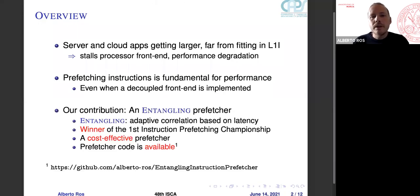Our contribution is an entangling prefetcher for instructions. Entangling is a kind of correlation which is based on latency. Instead of correlating consecutive accesses or misses, it's correlating between accesses that are at different distances based on the latency entailed by them. The entangling prefetcher was the winner of the first instruction prefetching championship. We will present here a cost-effective version of that entangling prefetcher, and we release our prefetcher code in the link below.